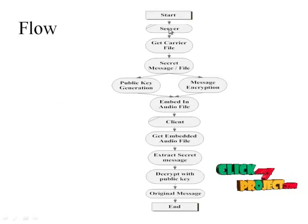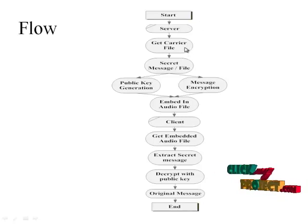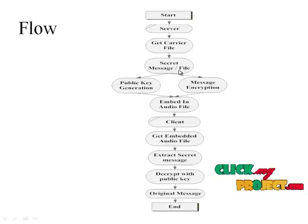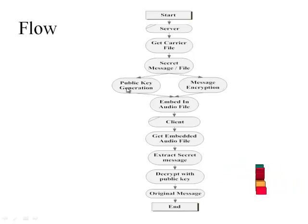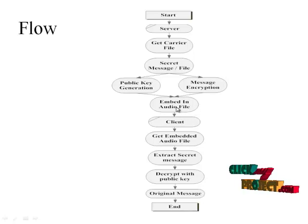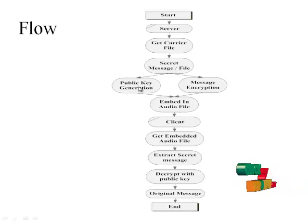Flow of the project: the server will start the process. The server will get the carrier file as an audio file — it should be in wave format. The server will also get the secret message which is to be transferred to the client receiver. The server will encrypt the secret message using a public key, which is generated by the server. After encryption, the encrypted message will be embedded into the audio file using a key file.